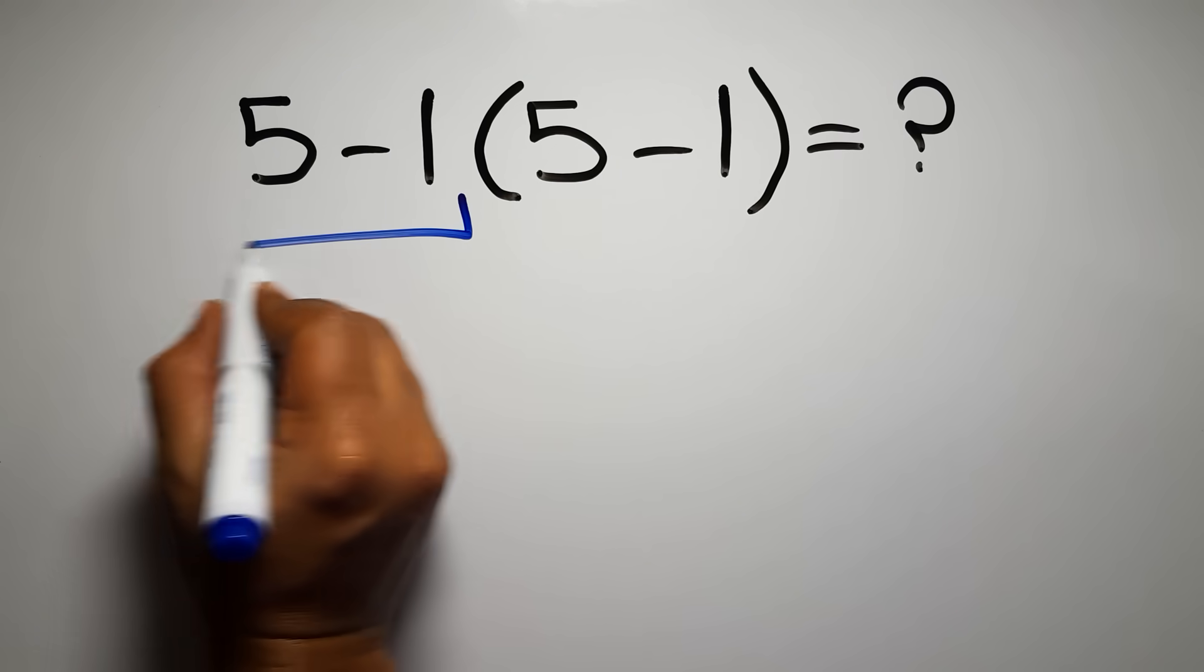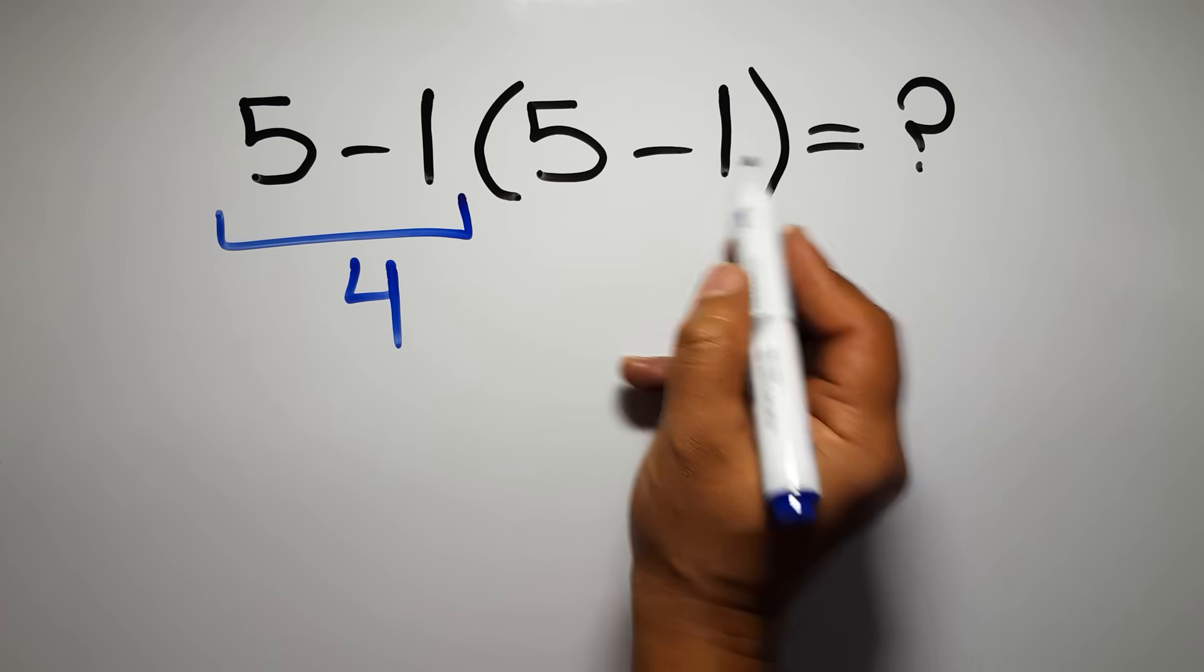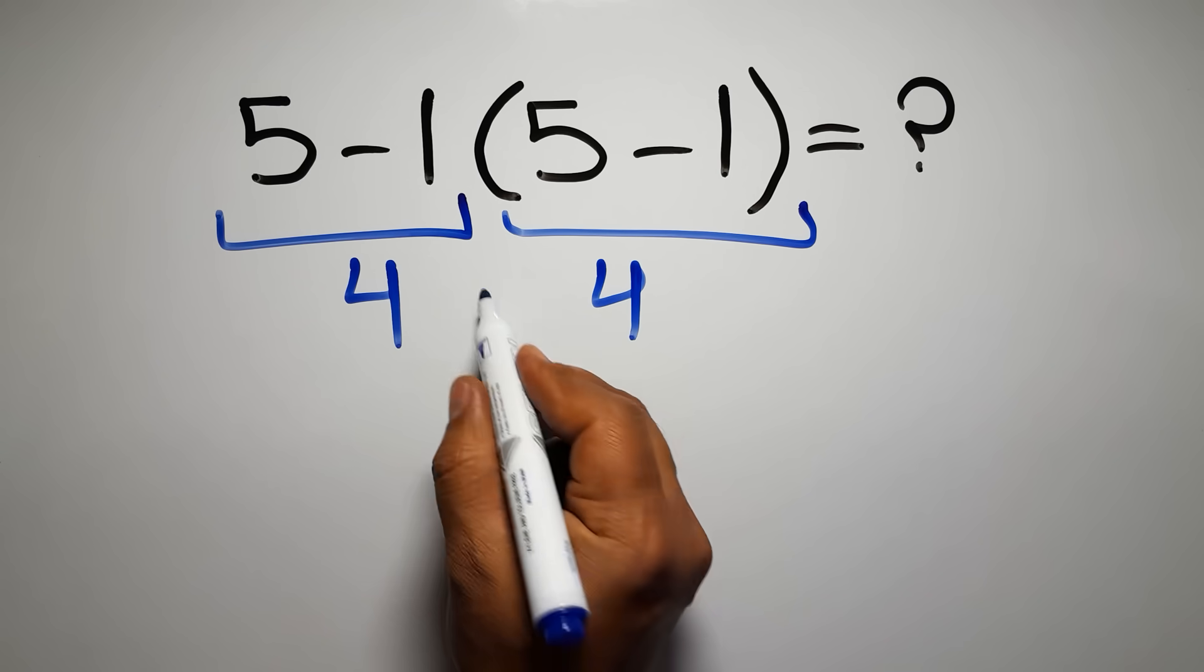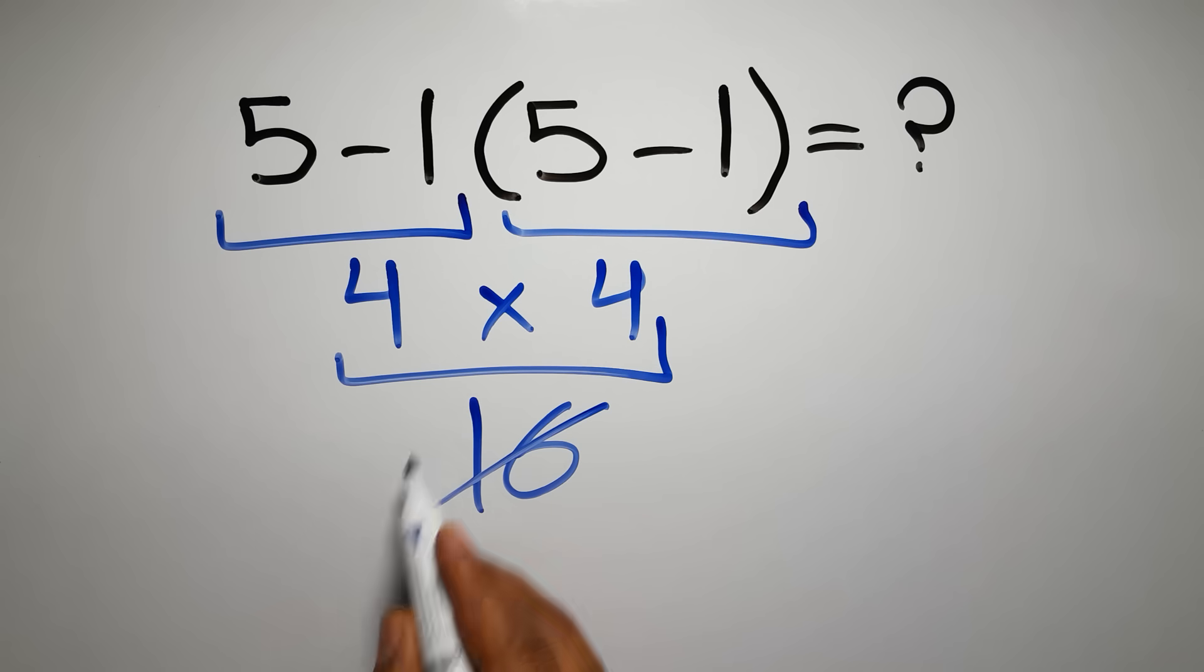5 minus 1 gives us 4, and again here we have 5 minus 1, so 4 times 4, which equals 16. But this answer is not correct.